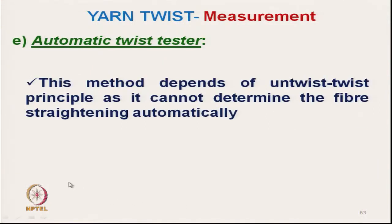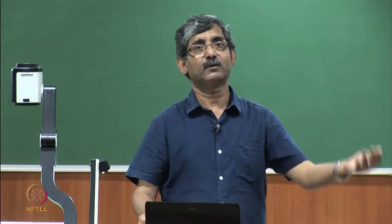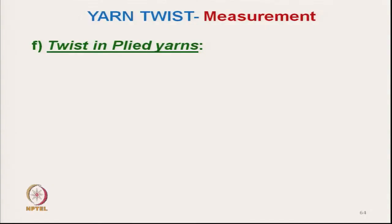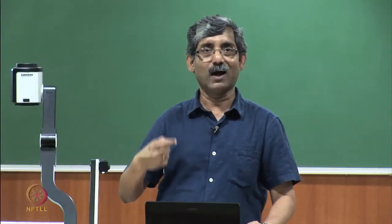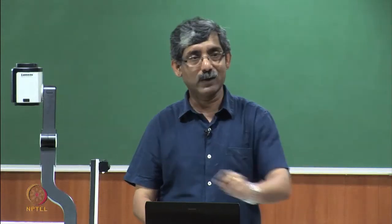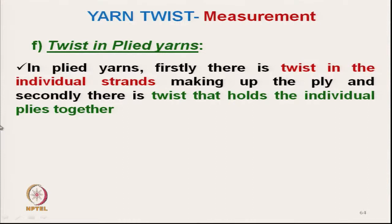Another method is the automatic twist tester, which works on the same untwisting-twisting principle but automatically. Since it cannot determine fibre straightening automatically, it is the automated version of the manual method. Now, for twist measurement in plied yarn — in ply yarn measurement of twist is straightforward. We use a simple counter to untwist the ply and can use a pin to detect when it passes through, counting the number of twists. However the concept of plying is a little bit tricky.